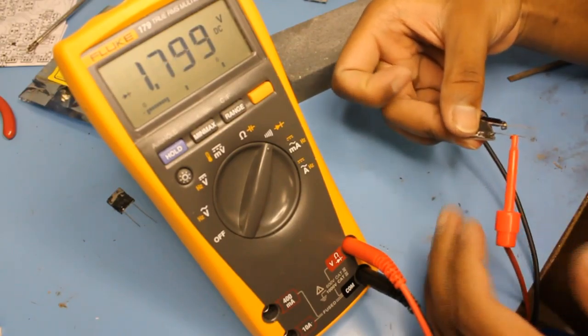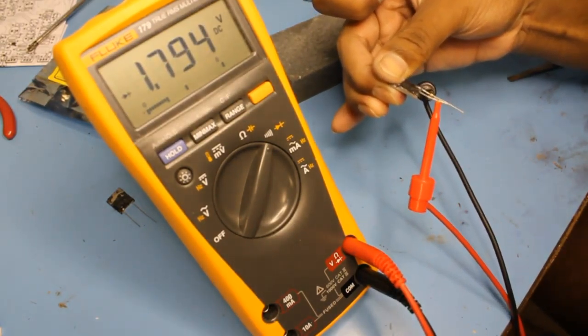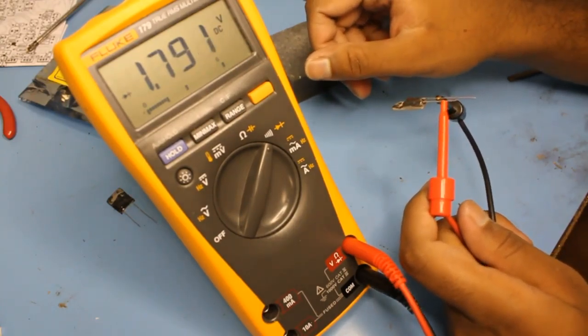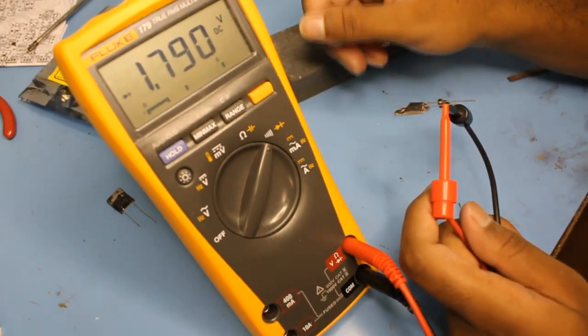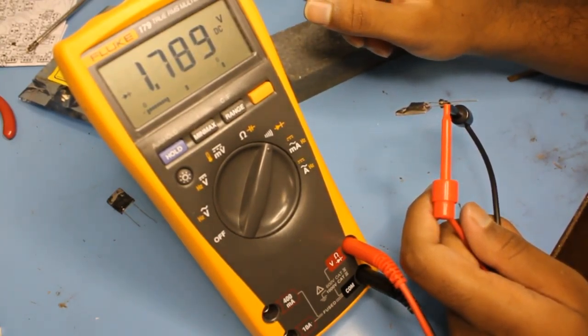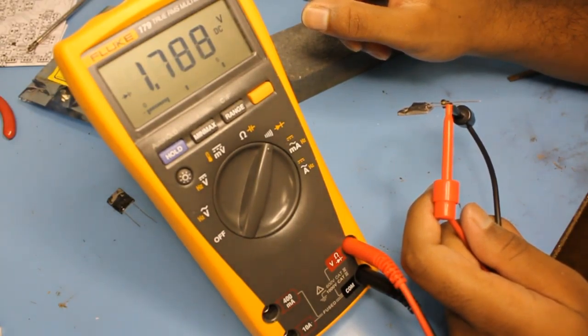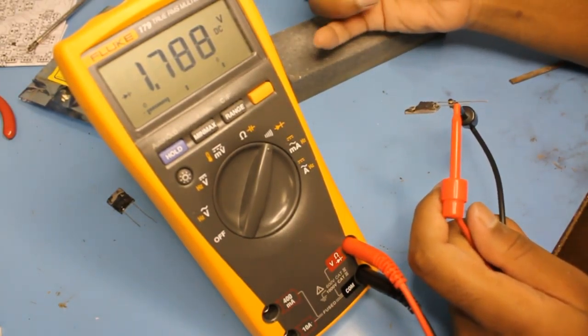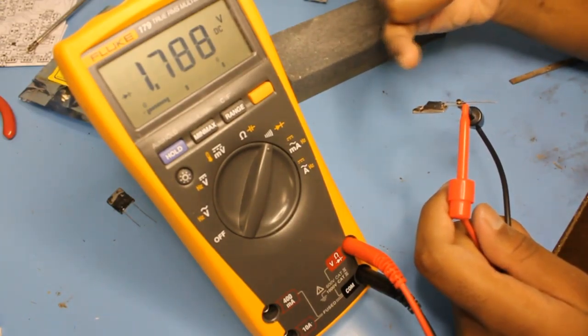The harder I hold it, the faster it drops. Take my finger off and once it stabilizes, it'll actually start going back up. It will take a while to stabilize because it has a big massive aluminum heat sink on it.